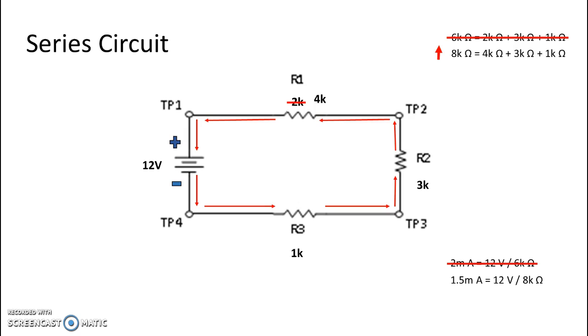which is 12 volts, our applied voltage, divided by our new resistive value of 8k ohms. So you can see that current is decreasing.